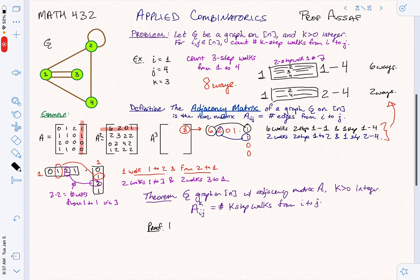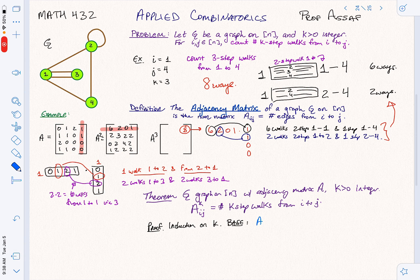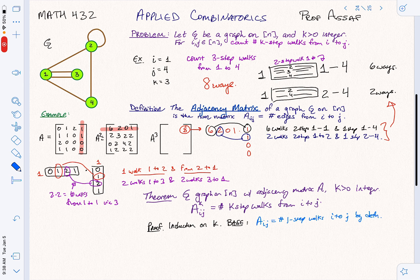So we're going to start by induction. Induction is a great way to do it. Induction on what? Not N, but K. Because notice that we did it for a few steps and then a few more steps. So K is the right thing to do induction on. Our base case. What's our base case? So the base case says A IJ equals the number of one step walks from I to J. This is by definition. That's how we define the adjacency matrix.